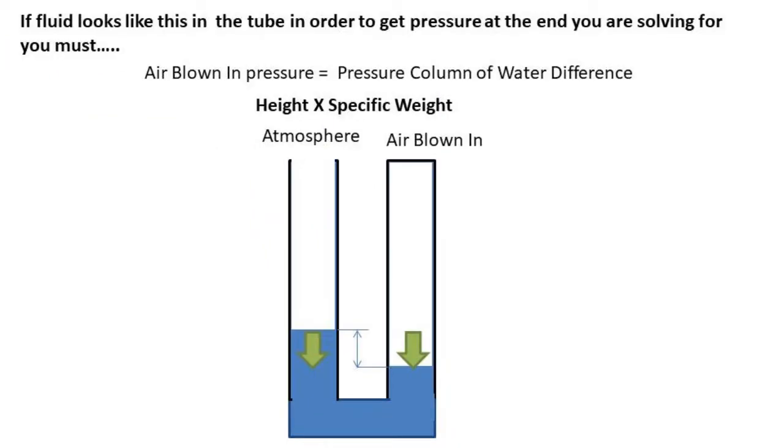If the manometer has a greater water height on the end open to the atmosphere, that means that the weight of the water is pushing on the air that I blew in. In this system, the pressure I blew into the pipe is canceled by the height difference of the two columns of water.